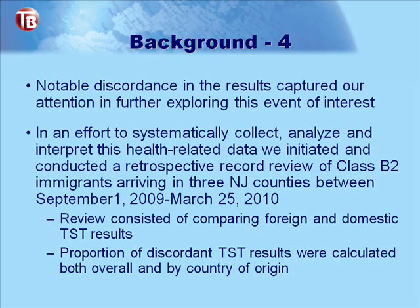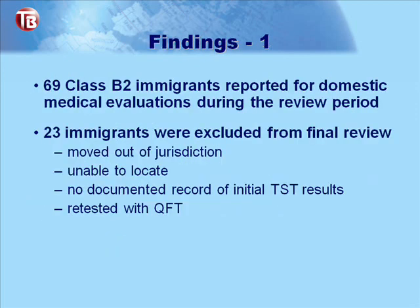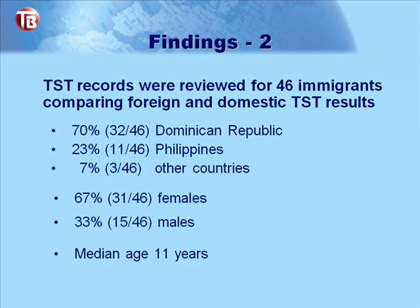In an effort to collect, analyze, and interpret this health-related data, we initiated a retrospective record review of Class B-2 immigrants arriving at three New Jersey counties between September 1, 2009 and March 25, 2010. We decided to include another county, but numbers remained small. The review compared foreign and domestic TST results, calculating the proportion of discordant results both overall and by country of origin. Sixty-nine Class B-2 immigrants reported for evaluation during this period; however, 23 were excluded — several moved out of jurisdiction, some were unable to be located, a few had no documented initial TST results from their country of origin, and a few were retested with QFT. This left 46 immigrants for comparison. Thirty-two of the 46 were from the Dominican Republic, about a quarter from the Philippines, and seven percent from other countries including Haiti, Thailand, and Vietnam. Gender breakdown was two-thirds female, one-third male, with a median age of 11.